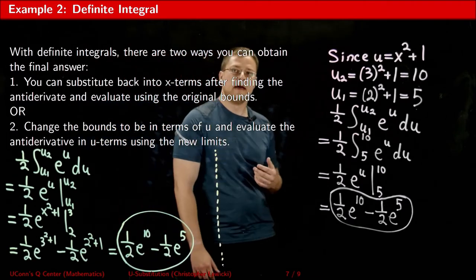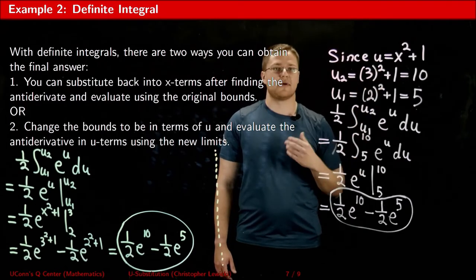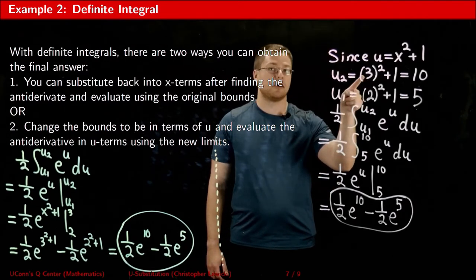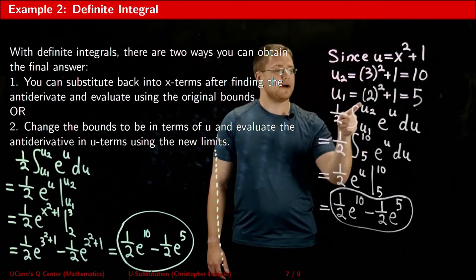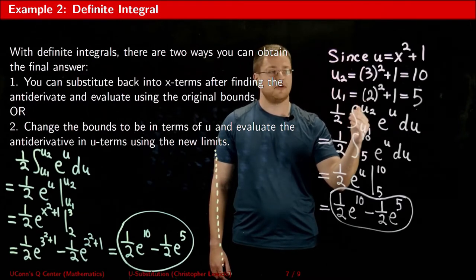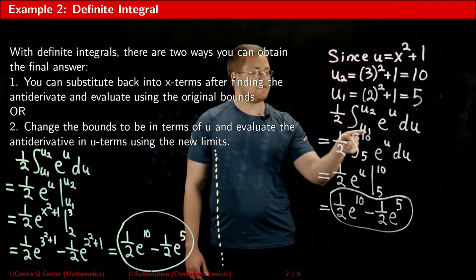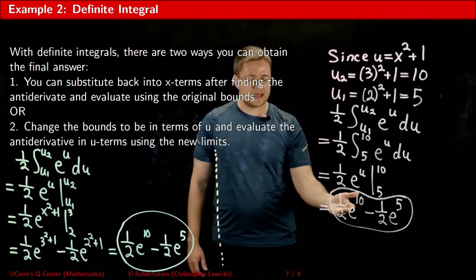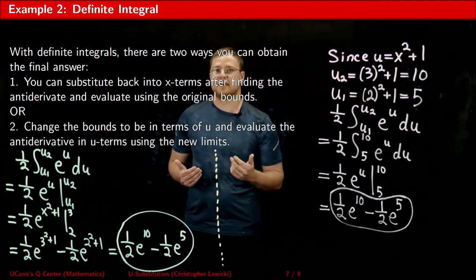Another option is to solve for the values of the temporary placeholders. Since u equals x squared plus 1, we substitute the original upper bound to get the new upper bound of 10, and substitute the original lower bound to get the new lower bound of 5. Substituting in those values, you can then proceed with the integration as normal and arrive at the same answer. Both methods require roughly the same amount of work, so it boils down to personal preference. For any definite integral, both methods will get you the correct answer as long as your algebra is correct.